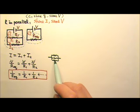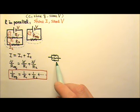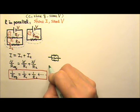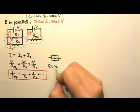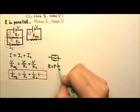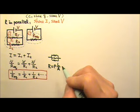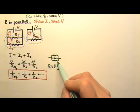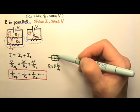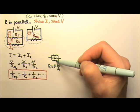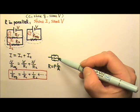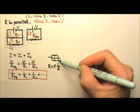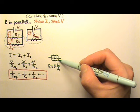This also means that the more resistors we have in parallel, the smaller the equivalent resistance. It's kind of like the resistance of a wire: rho times L over A. The more resistors we have in parallel, it's like we have a thicker wire — the bigger the A, the smaller the resistance. So the more resistors we have in parallel, the smaller the equivalent resistance.